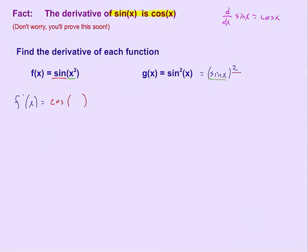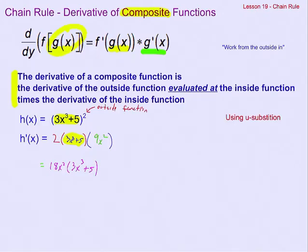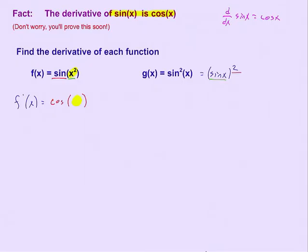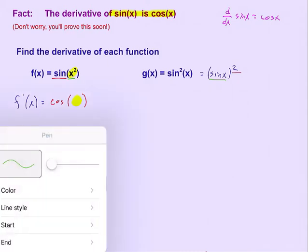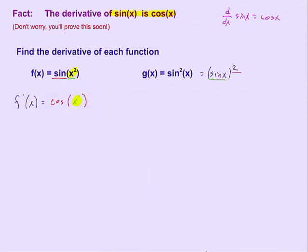But remember what I said, whatever appears in here is going to have to appear inside again. Going back to the formula, that's the g of x, and g of x appears the same way both times. So it's not just cosine of x, but it's the cosine of x squared. And then that gets multiplied times the derivative of the x squared. So it's cosine of x squared times 2x.